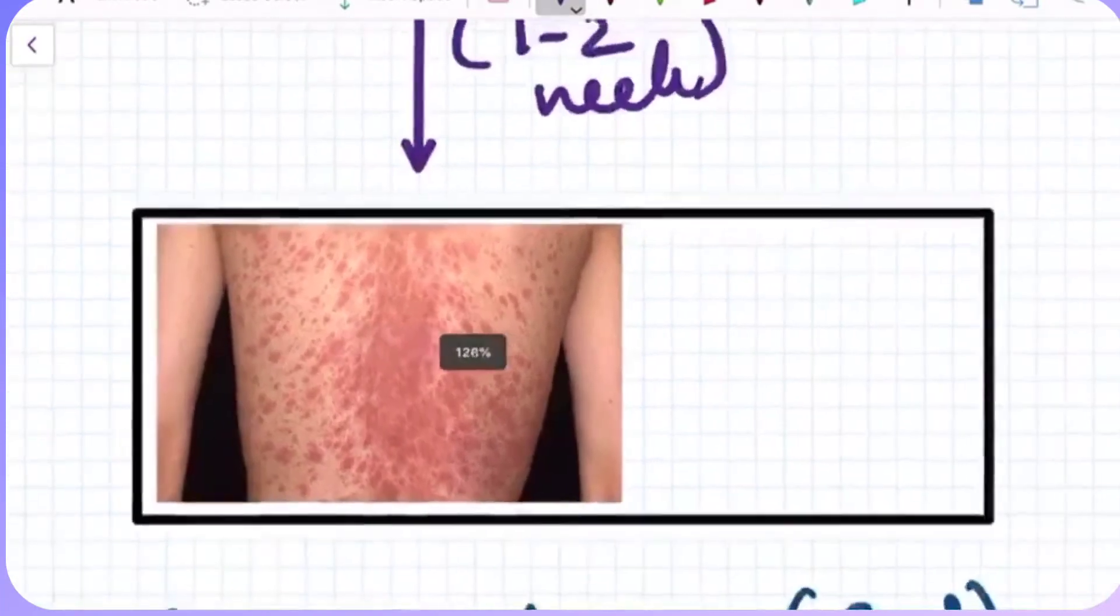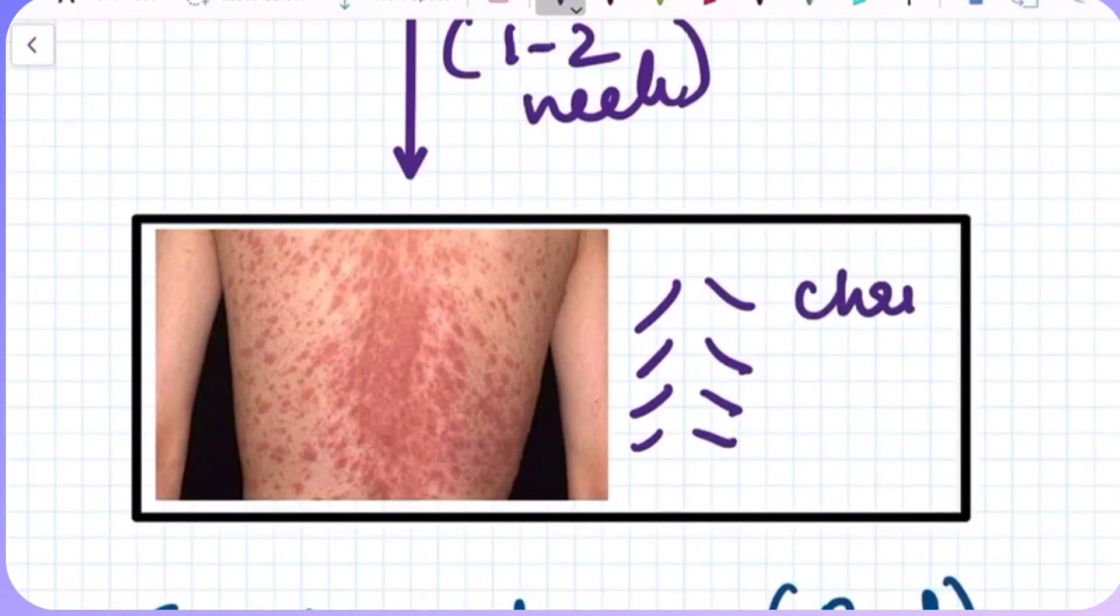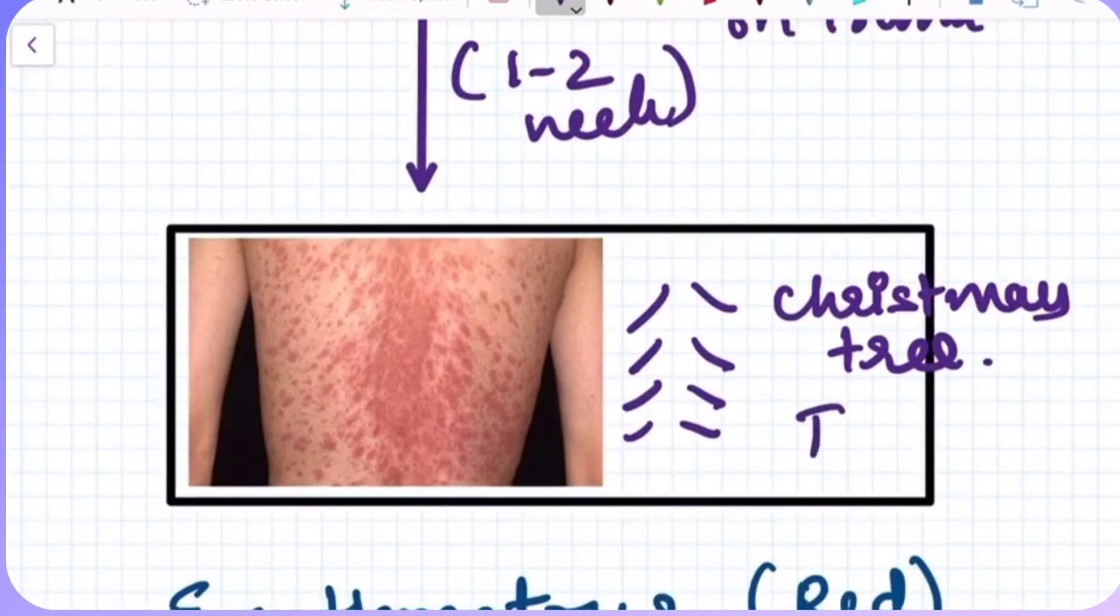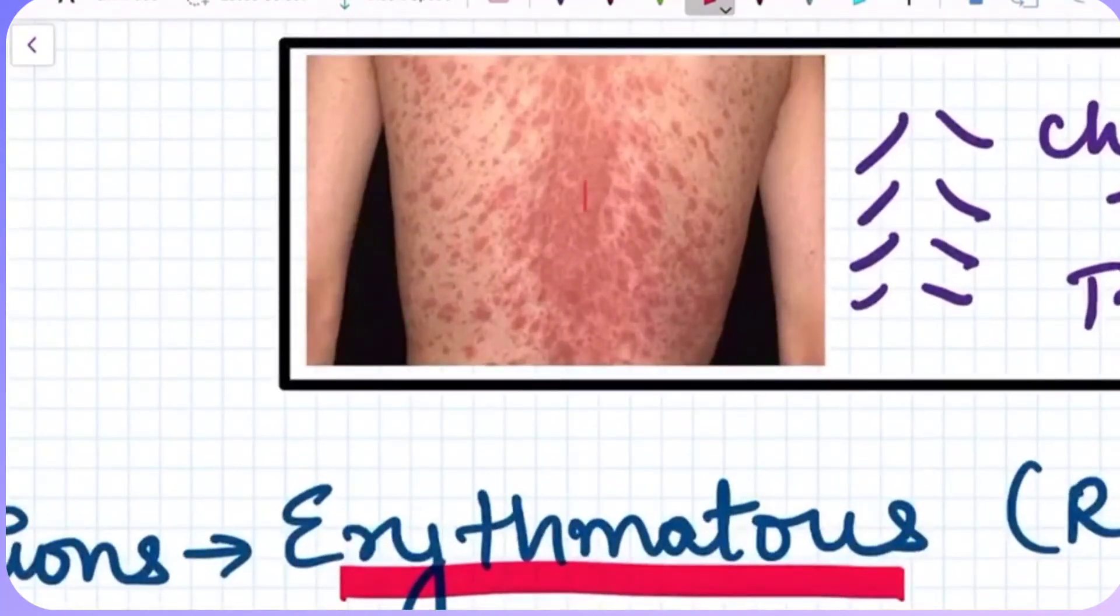These are referred to, if you see it, it is like a Christmas tree. These lesions arrange themselves or look like a Christmas tree on the back of the trunk. If I have to describe these lesions, these are erythematous. We can see it is reddish in color.